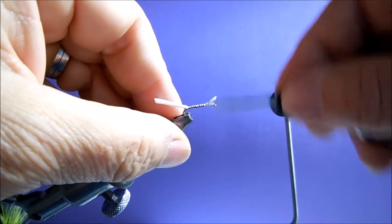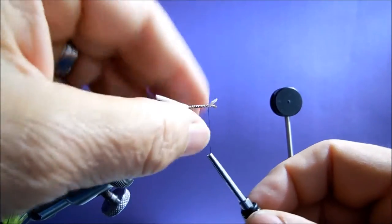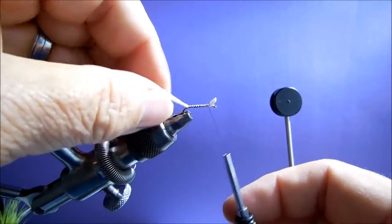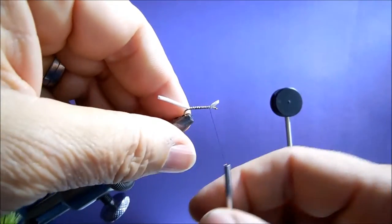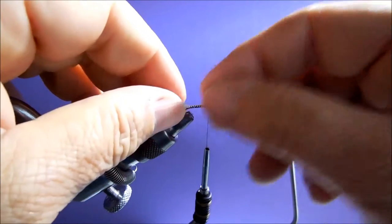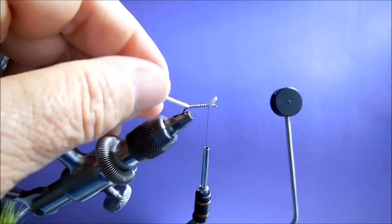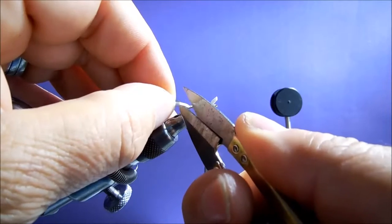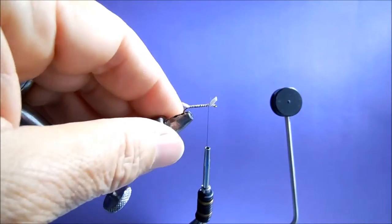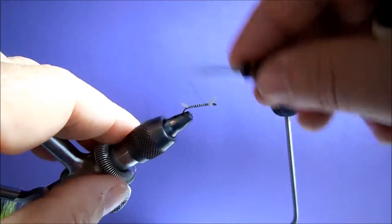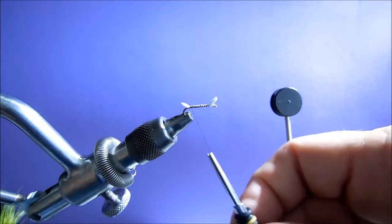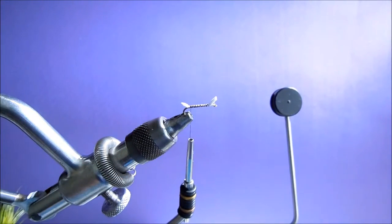This represents a chironomid pattern that's just about to break through the surface, get stuck in the film. You can see the wing butt casing and all that sort of stuff, just a little bit of a trim there. That's all this is supposed to simulate really, but apparently it takes a lot of fish.